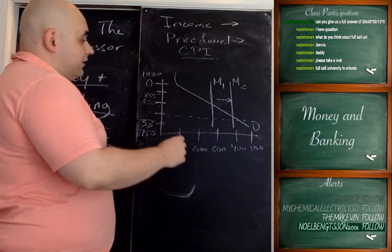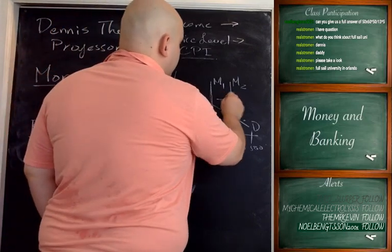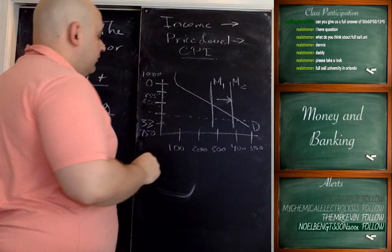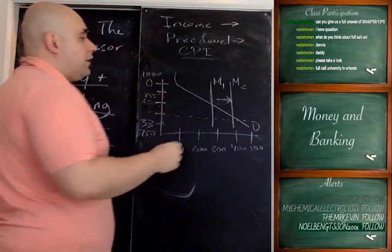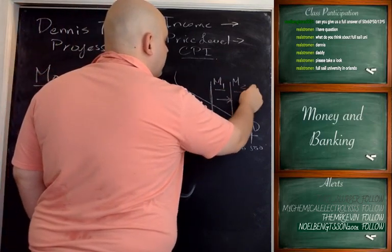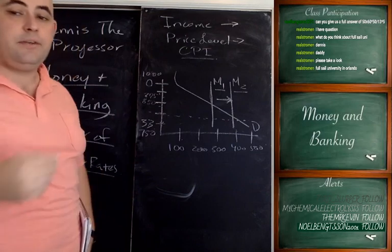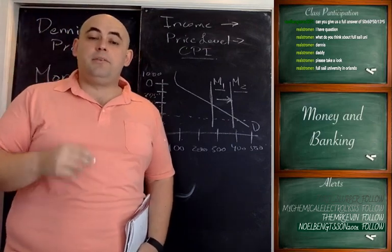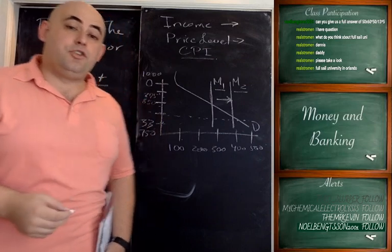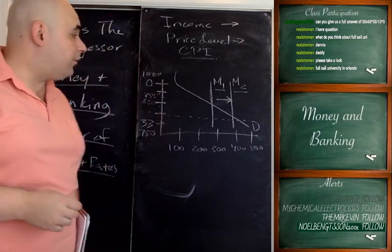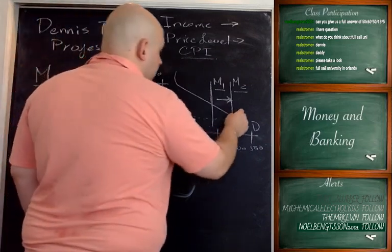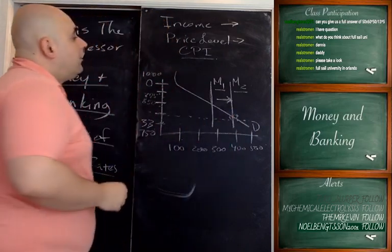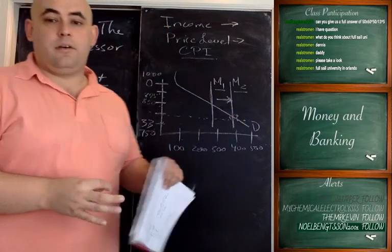Finally, the direct money supply shift: if the amount of money in the economy is increased by some other measure — whether it be quantitative easing, buying bonds, the government issuing very large deficits, or tax cuts — then the interest rates should also rise. These are the expected outcomes.